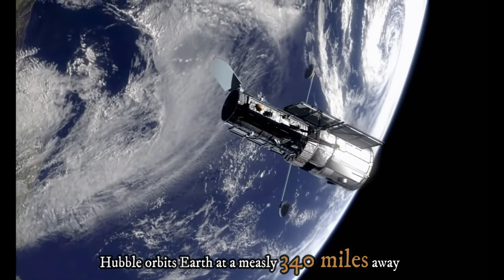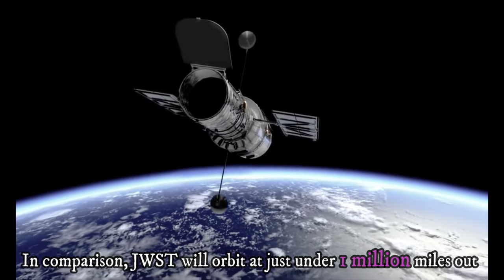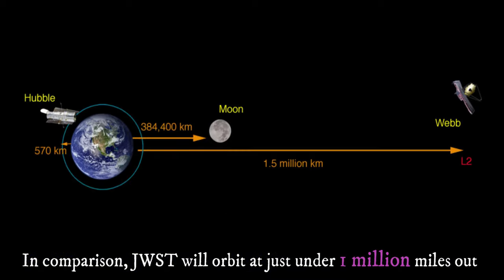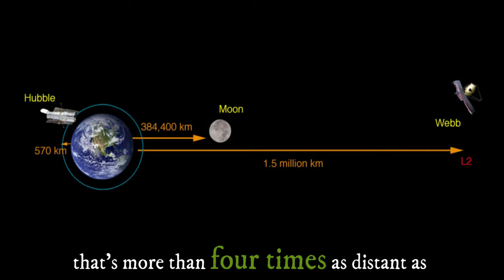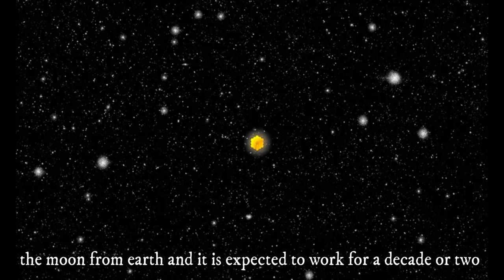Hubble orbits Earth at a measly 340 miles away. In comparison, JWST will orbit at just under 1 million miles out. That's more than four times as distant as the moon from Earth, and it is expected to work for a decade or two.